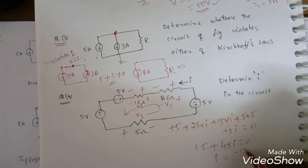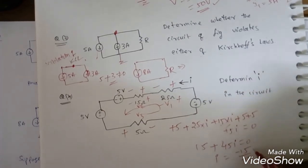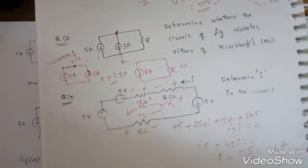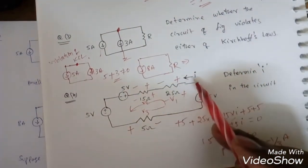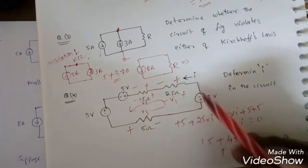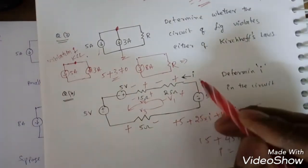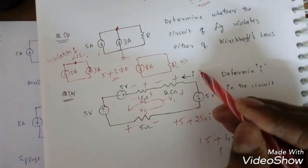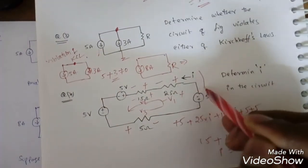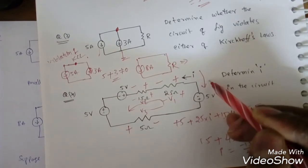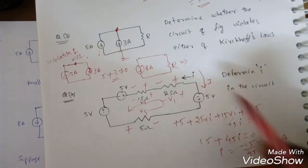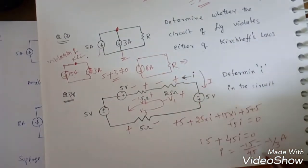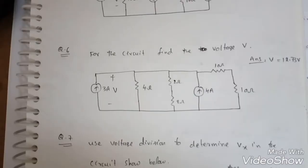So I equals minus 15 by 45, which is minus 1 by 3 amperes. The negative sign means the actual current direction is opposite to the assumed direction. However, since we only need to find I, the answer is minus 1/3 ampere.